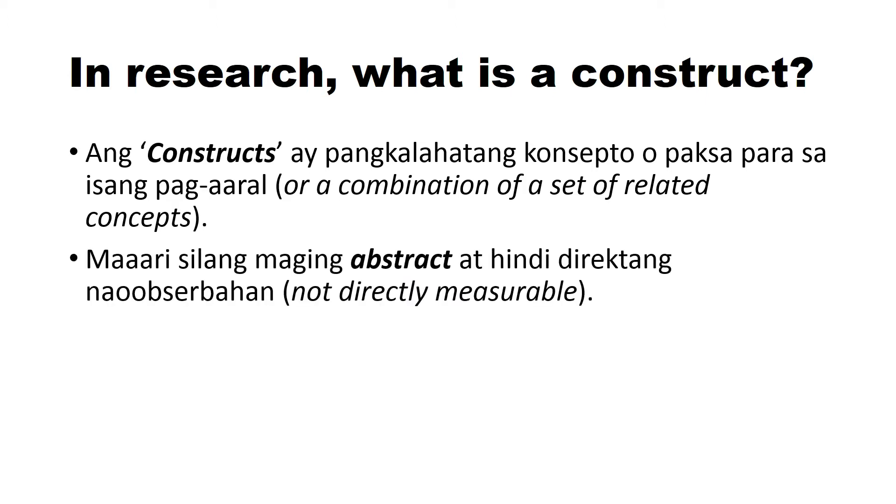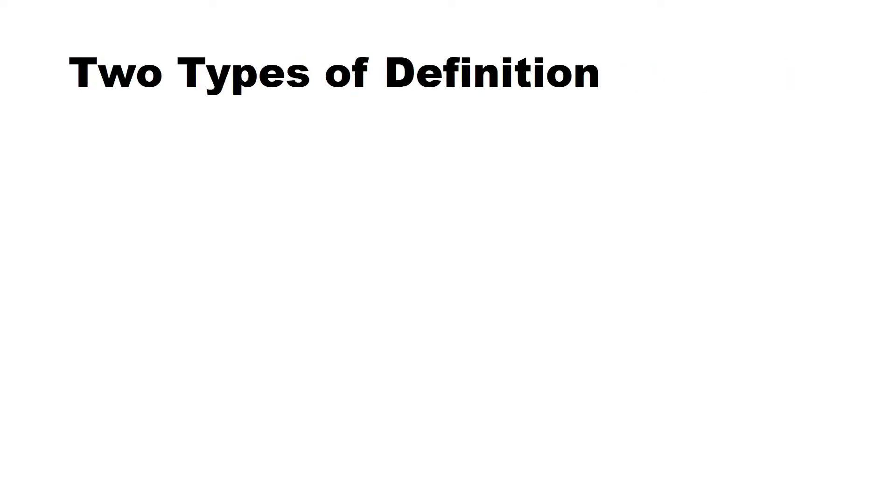And also, maaari silang maging abstract at hindi direct ang nau-obserbahan. Isa ito sa mga karakteristik ng construct na they could be abstract. Hindi sila direct na nau-obserbahan. Ibig sabihin, they are not like, if we are going to compare to variables, hindi sila necessary na ma-measure because these are concepts.